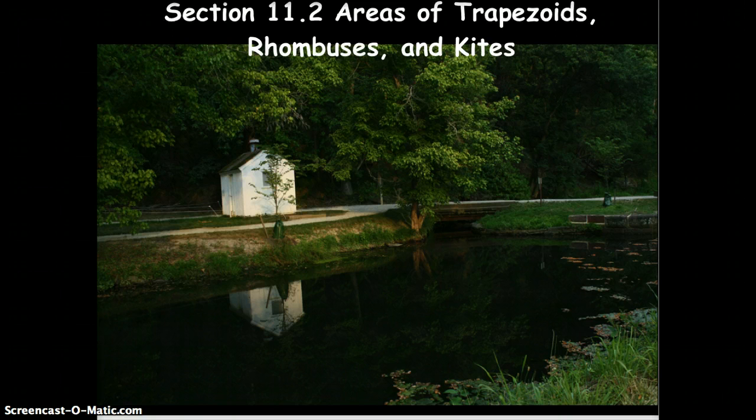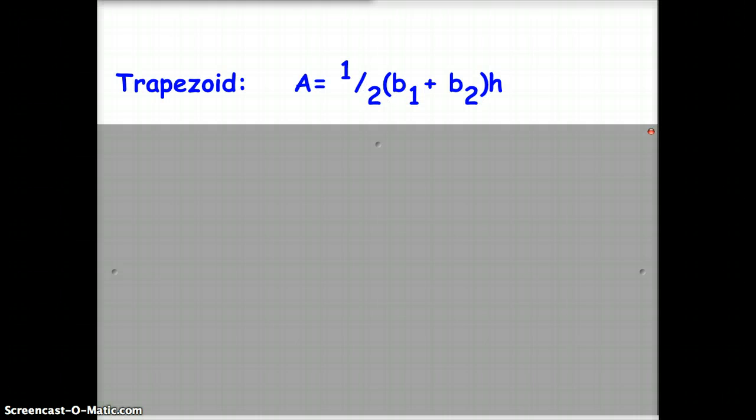As you discovered today in class, area of a trapezoid, the area of a trapezoid is half the sum of your bases times your height. Just like when we were dealing with slope and we had x sub 1 and x sub 2, that's what we have here. That's telling us the difference between the two bases. This doesn't mean that this is to the first power and this is to the second. It's simply telling us the difference between the first base and the second base.